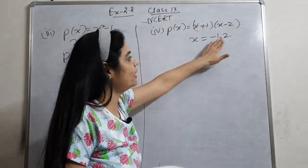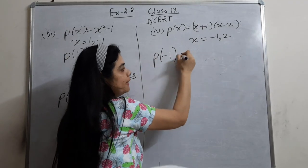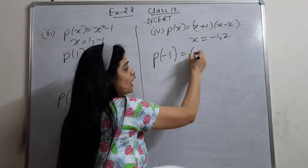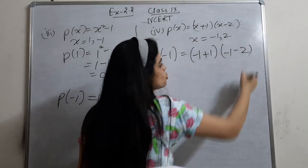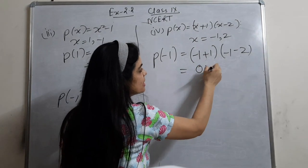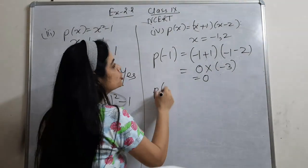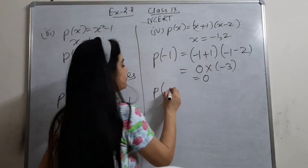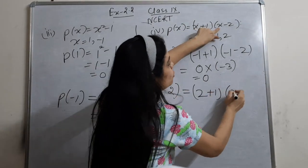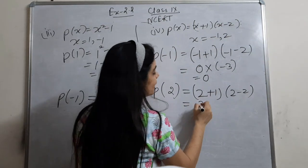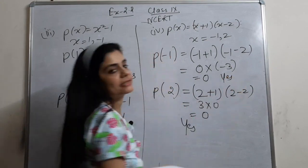Now the fourth part: two values, minus 1 and 2. First put x = minus 1: (-1 + 1)(-1 - 2) = 0 into minus 3, which is 0. Yes. Now put x = 2: (2+1)(2-2) = 3 into 0, which is again 0. So yes here as well. Both values are zeros.